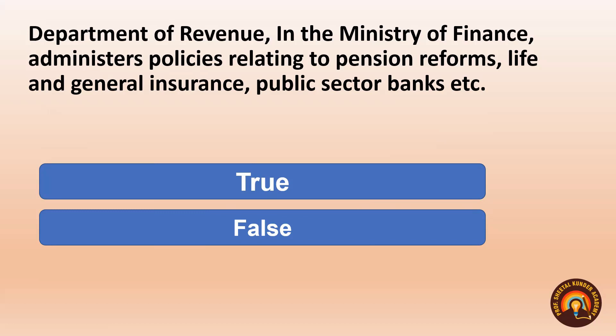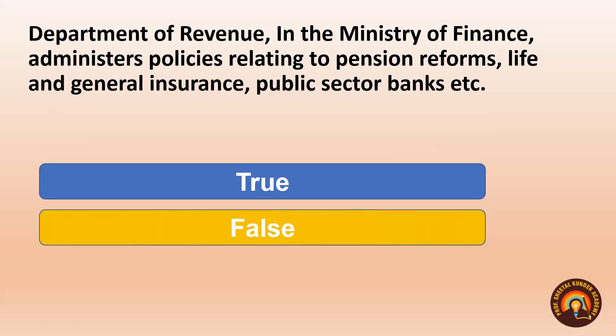Next: Economic offenses investigation and enforcement of economic laws — this work is done by the Department of Revenue, not another department. So the option is False.